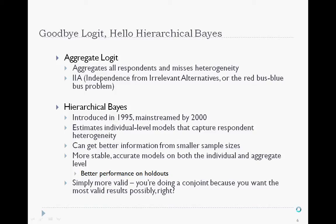Aggregate logit only models the average respondent. Logit has an assumption called IIA — Independence from Irrelevant Alternatives — and stats work best when this assumption is met. Suffice to say that this assumption is frequently violated when using aggregate logit for choice-based conjoint. The classic case is called the red bus, blue bus problem. When a model assumption is violated, it reduces the accuracy of the model. There are some modeling tricks to get around this issue, but it's a lot more work than simply using a better algorithm.